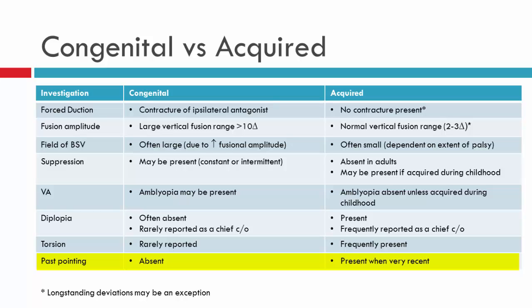Finally, we have a phenomenon called past pointing, which is absent in congenital or longstanding deviations but present in acquired or recent deviations, particularly when it's recent. I'll take you through this because it's actually not a test commonly performed in clinic, but it's worth noting because occasionally you may be interested in testing this in a patient to document that they certainly have a recently acquired neurogenic palsy.